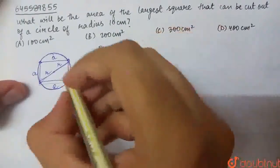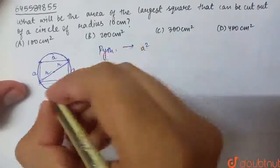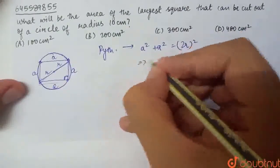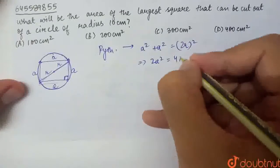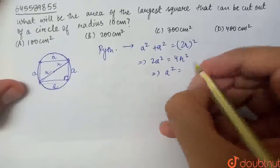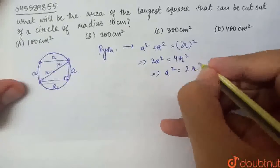Pythagoras theorem: here we have A square plus A square is equal to 2R whole square. So, 2A square is equal to 4R square. Therefore, A square is equal to 2R square.